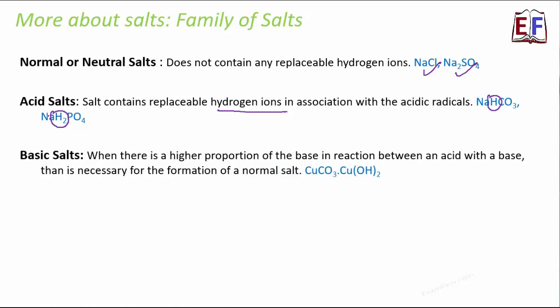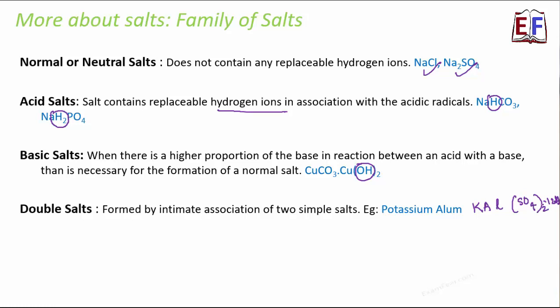Then we have basic salts. When there is higher proportion of base in the reaction between an acid with the base, then that is necessary for the formation of a normal salt. Basically, when you have more hydroxides. For example, here you have OH. That tells you that this is a basic salt. Double salts are formed by association of two simple salts. When two simple salts combine together, they form double salts. For example, potassium alum. If you look at the formula of potassium alum, it is KALSO4 2.12H2O. We also have something called mixed salt. They contain more than one acidic or basic radical. For example, bleaching powder. Bleaching powder is CAOCL2. These are just to tell you that even in salts, we have so many different categories.